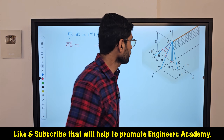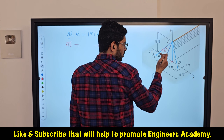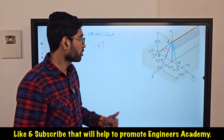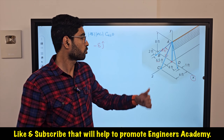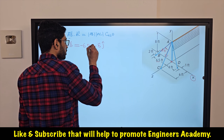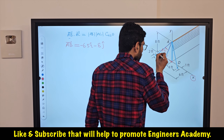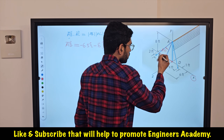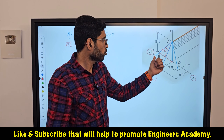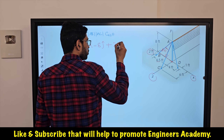We reach the origin, and then from there to reach point B we need to travel 6.5 feet in the negative X direction, so minus 6.5i. Then from there we travel 2 feet in the positive Z direction, so plus 2k.